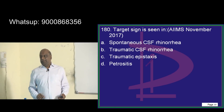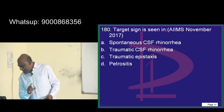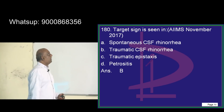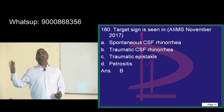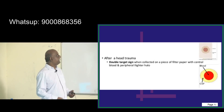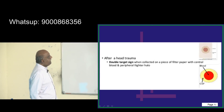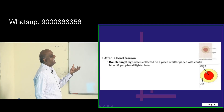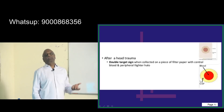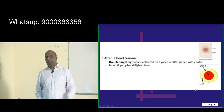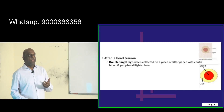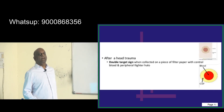Target sign — where do you see it? This is a very important question. Traumatic CSF rhinorrhea — you see the target sign. What is the meaning of target sign? On a piece of filter paper there is a central blood stain and a peripheral lighter halo, which is the CSF. That indicates this is a CSF rhinorrhea. Target sign.